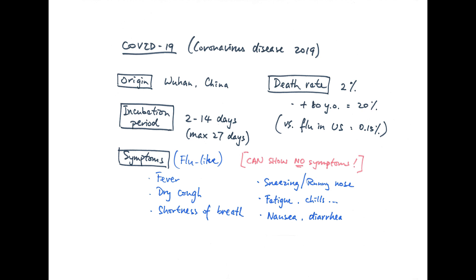The incubation period, which is the time it takes for the symptoms to show after the primary infection, is on average 2 to 14 days. However, there are cases where patients don't show the symptoms until 24 to 27 days later.